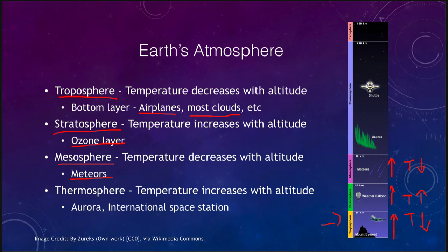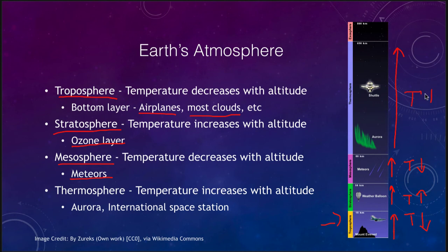The atmosphere never completely goes away — it just constantly thins out. In the thermosphere, the atmosphere is very, very thin, and that is actually reaching the edge of space, where things like the space shuttle or the International Space Station would orbit. The temperatures are increasing as you go further up here. It is also where you would see the aurora — where particles from the sun are exciting particles in the upper atmosphere and causing them to glow.